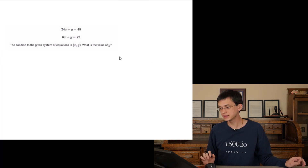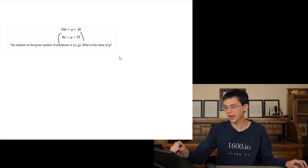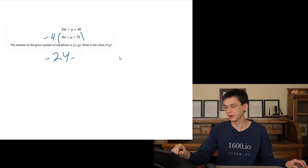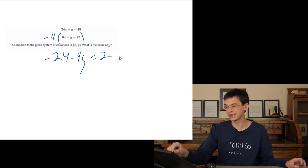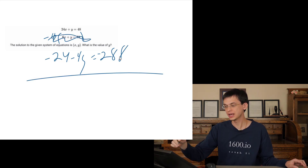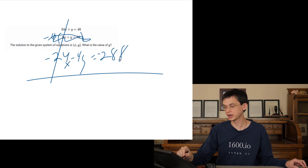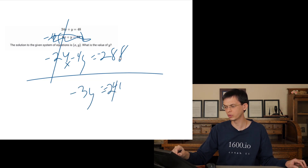We have two lines. What's the value of y? Let's eliminate x. Multiply the second equation by negative 4: negative 24 minus 4y equals negative 88. Add the two equations straight down — the x terms cancel. We get negative 3y equals negative 240, so y equals positive 80.